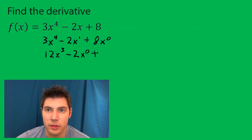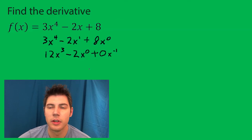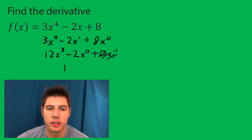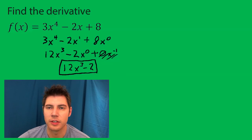And then we bring the 0 down, so 8 times 0 is 0, and it's x to the, doesn't really matter, negative 1. Well, 0 times anything is going to go away, and x to the 0 is just 1. So our final answer ends up being 12x cubed minus 2, and that's the answer.